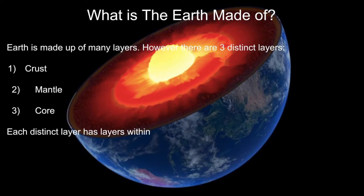What is Earth made of? Earth is made up of many layers. However, there are three distinct layers: crust, mantle, and core. Each distinct layer has layers within. Here's a picture of the crust, mantle, and core.